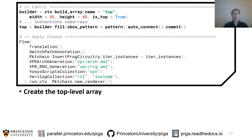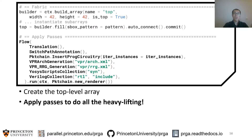Now we are done customizing our FPGA. PRGA does all the heavy lifting with passes, which are Python objects. These passes will automatically create switches to implement the configurable connections, insert configuration circuitry, generate all the CAD scripts, and produce human-readable, ASIC-compatible RTL. As a PRGA user, you are also welcome to add your own passes.